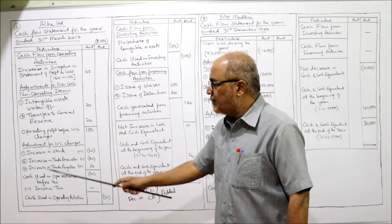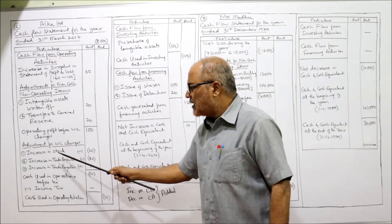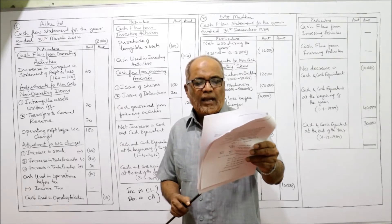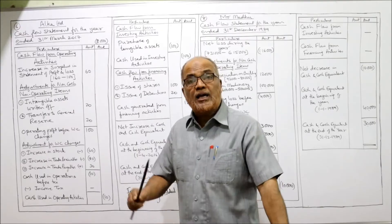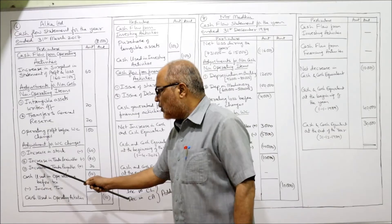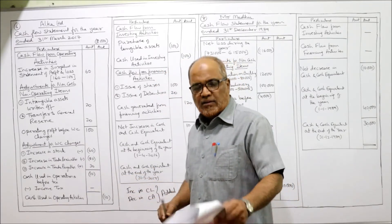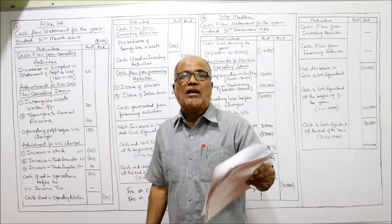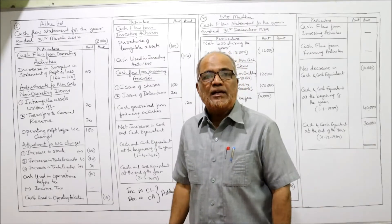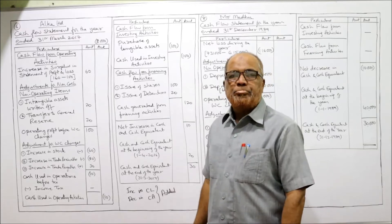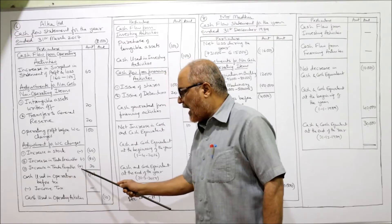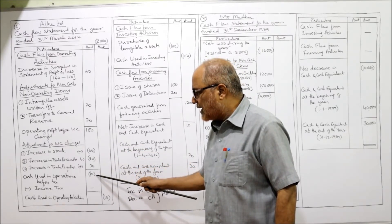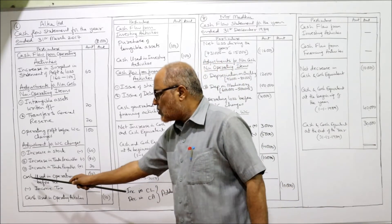Increase in stock/inventory: deduct 60. Second item — trade receivable: last year 120, current year 200 — again an increase. Increase in trade receivable: minus 80. Next, current liabilities — trade payable: last year 80, current year 110 — increase in trade payable; since it is a current liability and it increased, it should be added: plus 30. So 100 minus 60 minus 80 plus 30 gives minus 10.